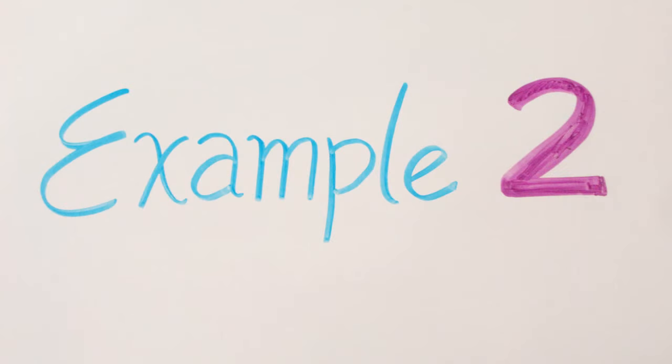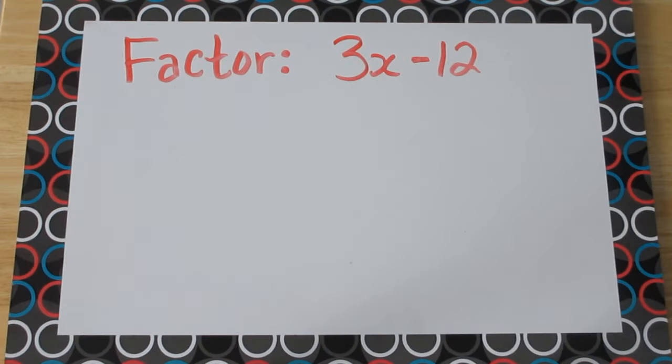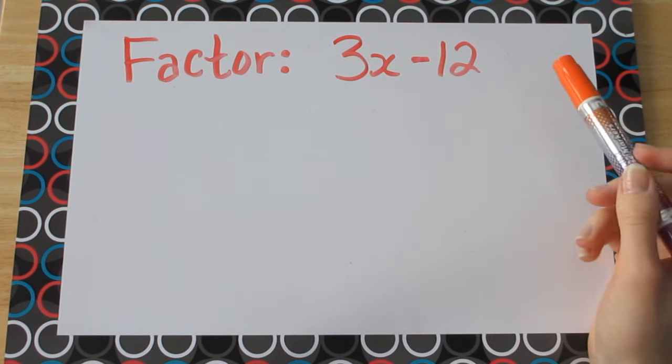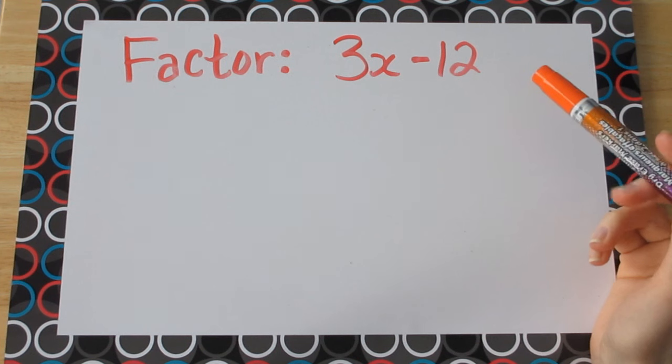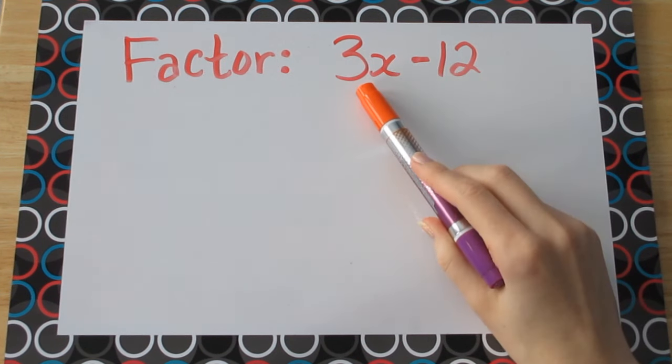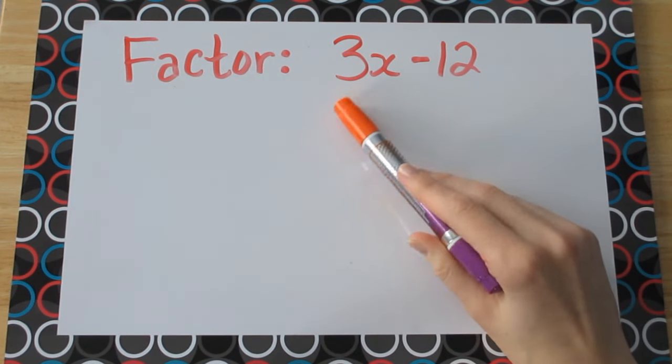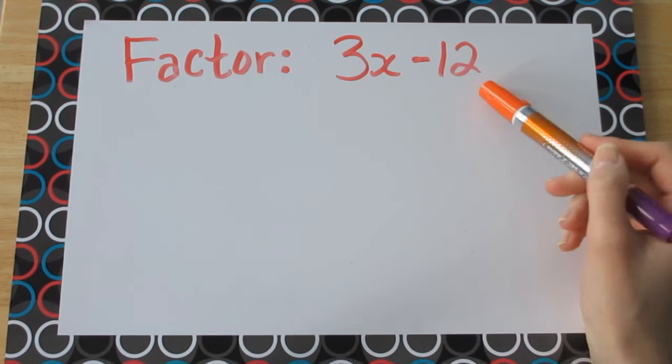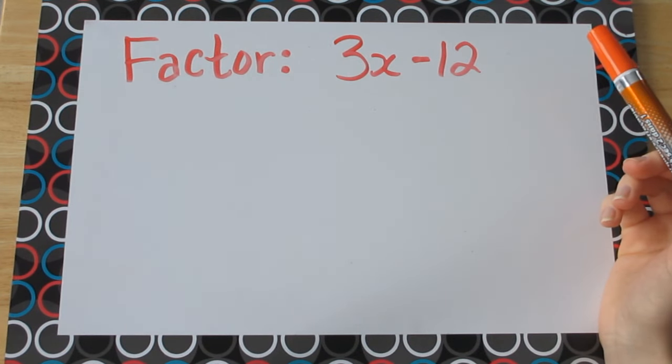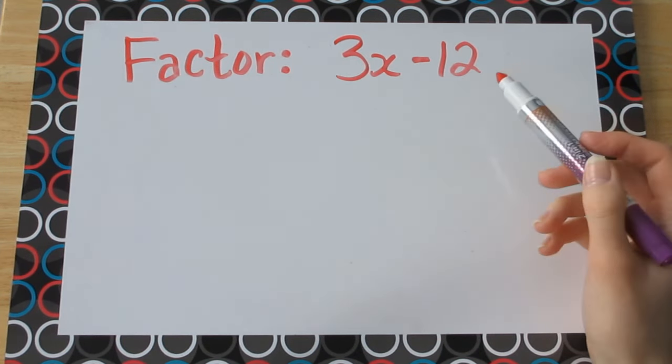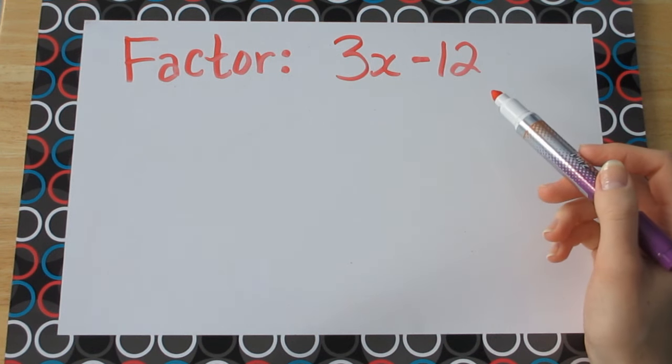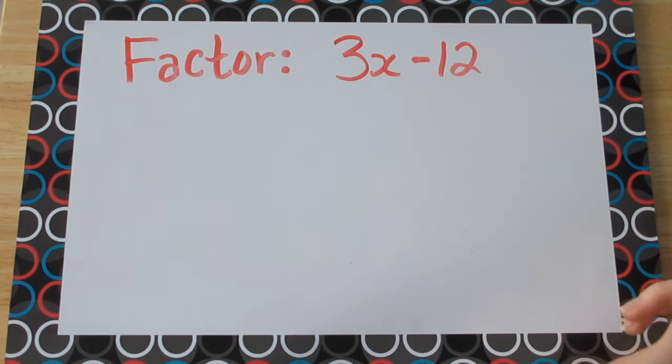Now let's take a look at this second example, factor 3x minus 12. We'll be factoring this in the exact same way by looking for something in common that can be divided off. So let's see here, 3 can only be divided by 1 and 3, so let's check if 12 can be divided by either of these numbers. It can be divided by 1, but there really is no point to do that, so instead we'll be dividing 12 by 3.